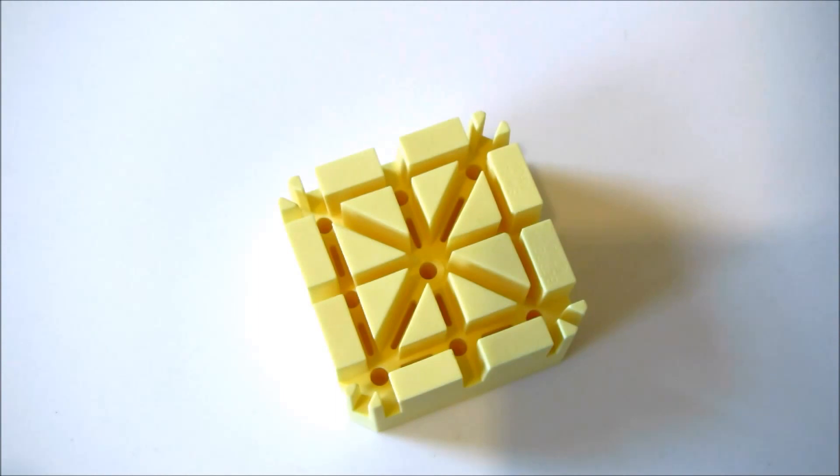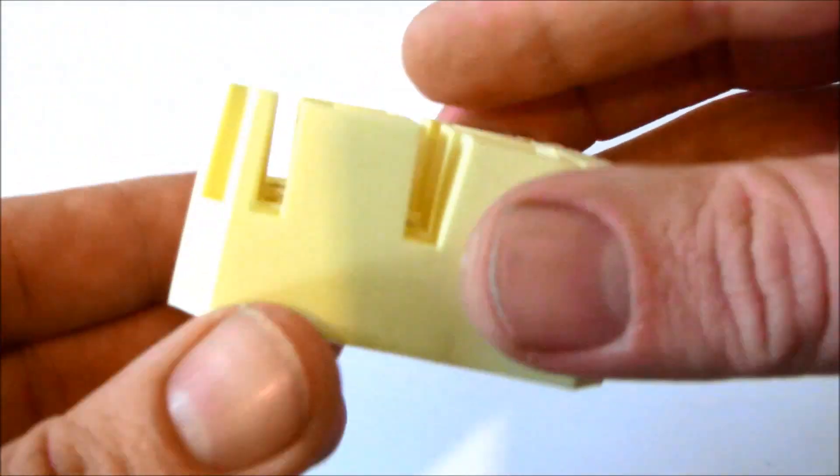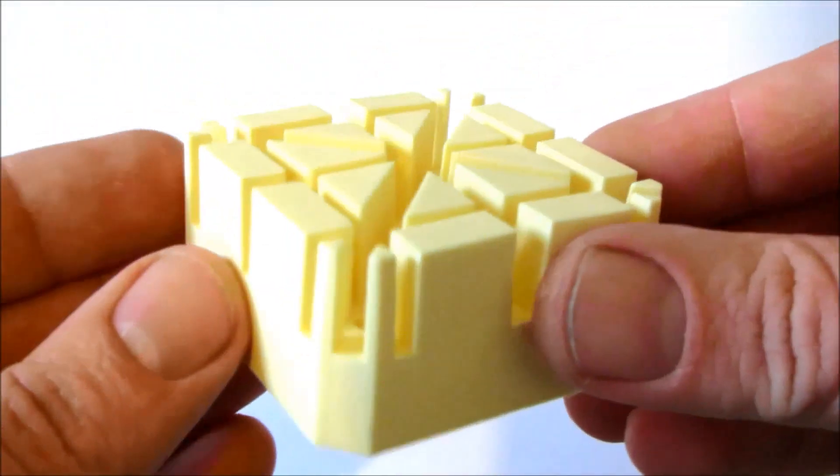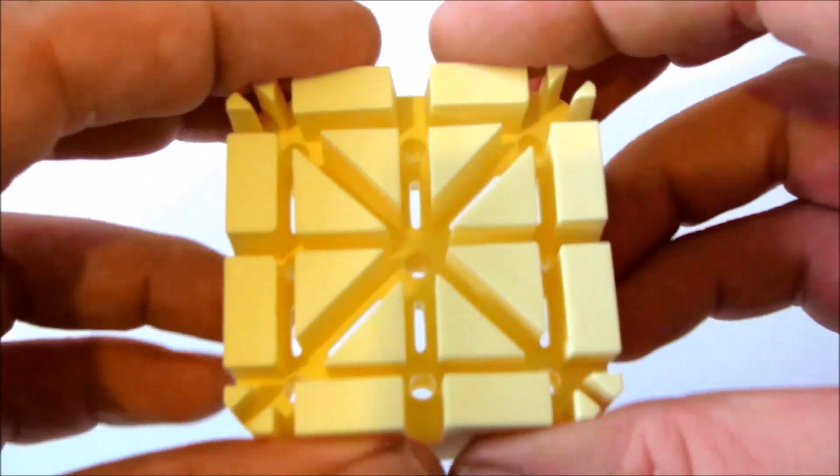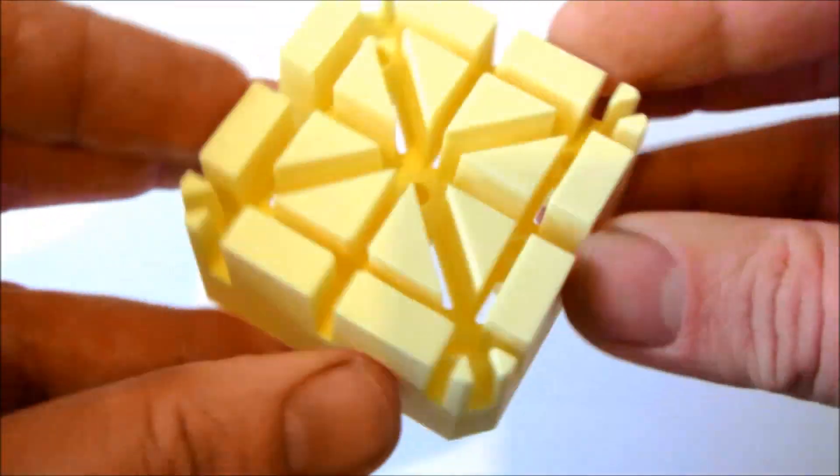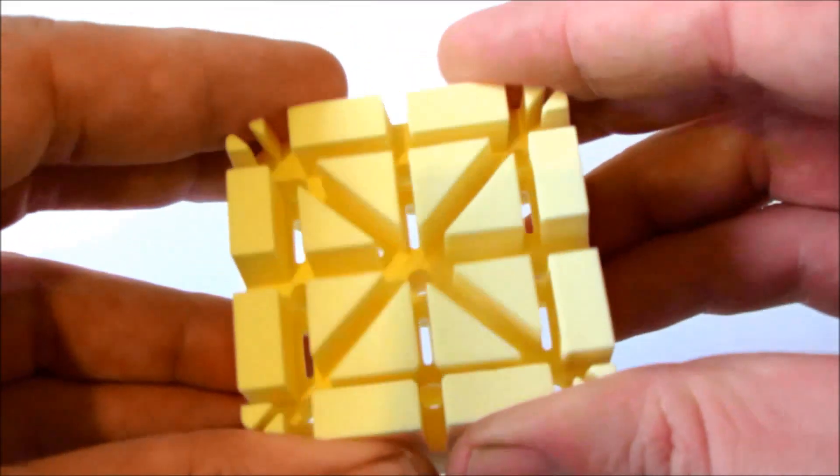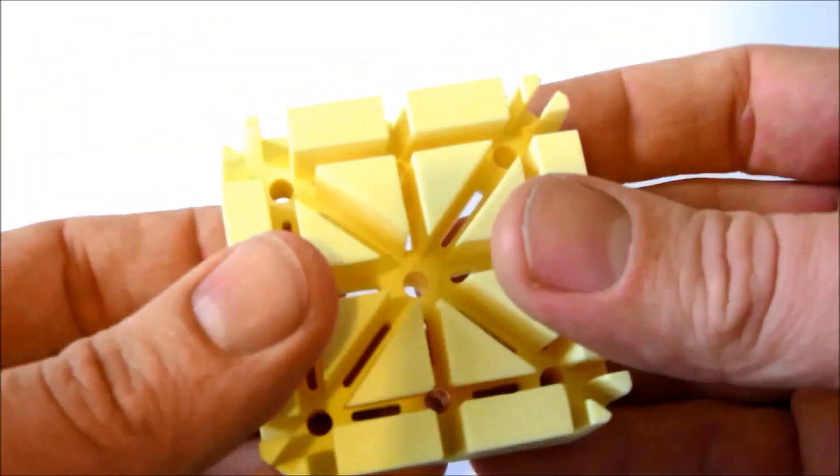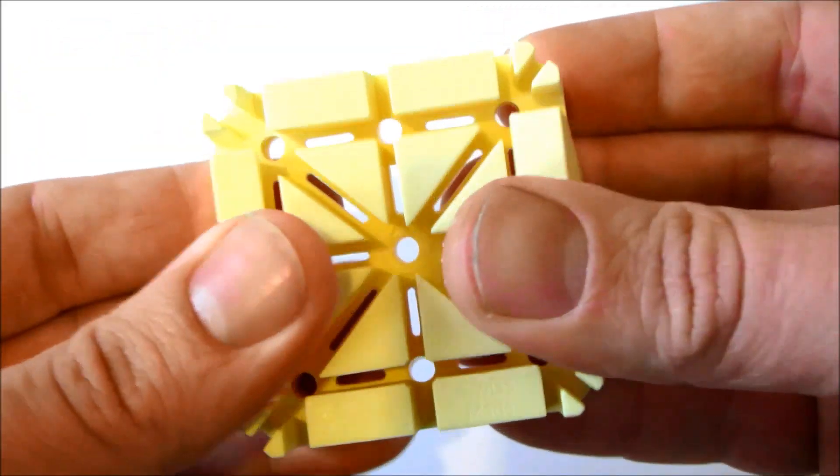Here we have Bergeon Reference 6744-P-S watch bracelet support. It's used to hold watch bracelets upright while driving out pins or removing screws. The holes and intermittent spaces are there to eject the pins into.